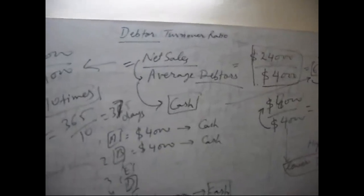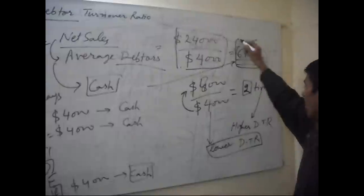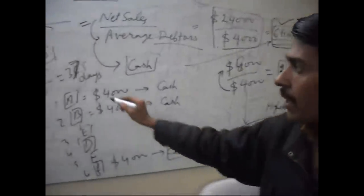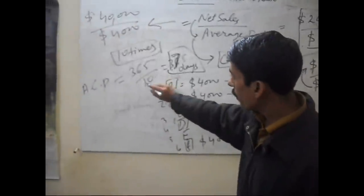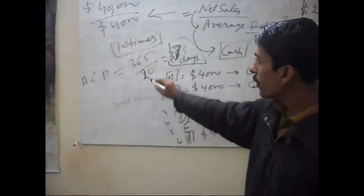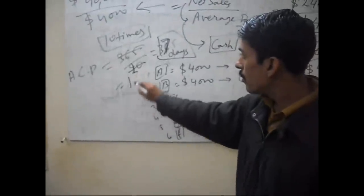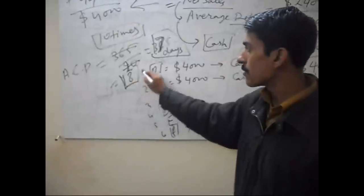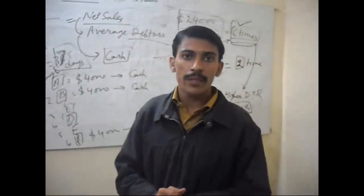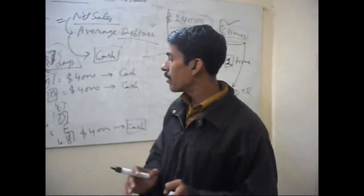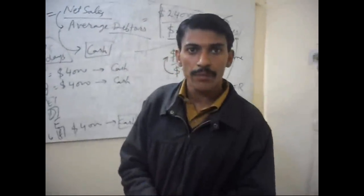Higher debtor turnover ratio means less time for collection. If it is 20, it will be half, approximately 18 days. This will be very beneficial to manage our debtors. Thank you very much.